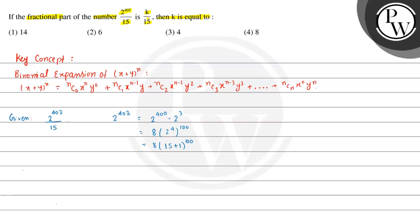Now if we apply binomial expansion to 8 multiplied by (1+15)^100, we will get 8 multiplied by 100C0·1^100·15^0 + 100C1·15 + 100C2·15^2 + 100C3·15^3 and so on.